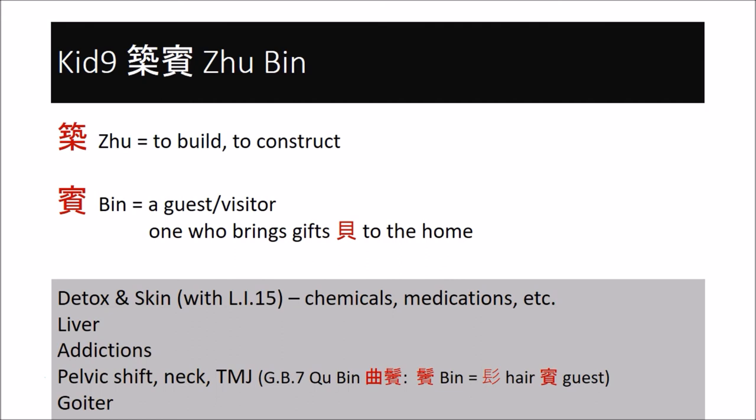Kidney nine is the point of choice for structural shifts, such as pelvic shifts or TMJ or neck problems. The bin in gallbladder seven, Qubin, is the same character with the addition of hair, so there is some connection between kidney nine and the temples. In cases of goiter, kidney nine tends to be the preferred point over other kidney points. Kidney nine is usually the point for treating the physical kidney, reflecting on or above bladder 23, as well as on the deeper pressure just inside of spleen 15. If kidney nine does not do it, try either kidney seven or take the point three fingers below kidney ten — this point is considered to be kidney nine detox for painkillers.